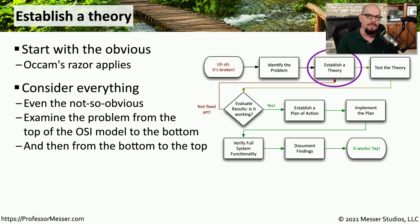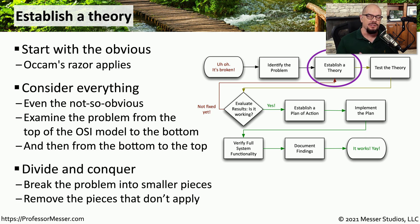Some people like to start at the bottom of the OSI model and make sure that their cable is working properly, that signal is getting through the switch, and then work their way up the OSI stack. Other folks prefer to start with the application and work their way down. Both of these are valid, as long as we're starting at one end, breaking the problem into smaller pieces, and discarding anything that may not be associated with our particular issue.